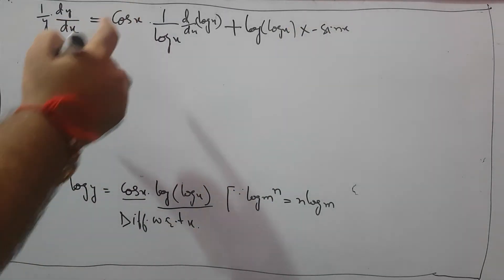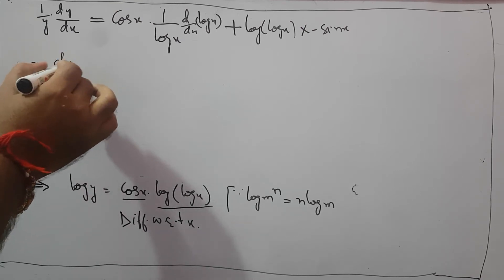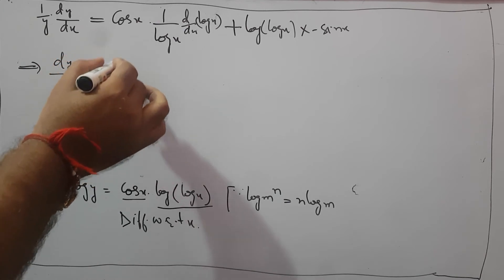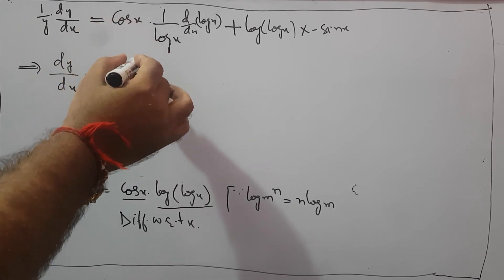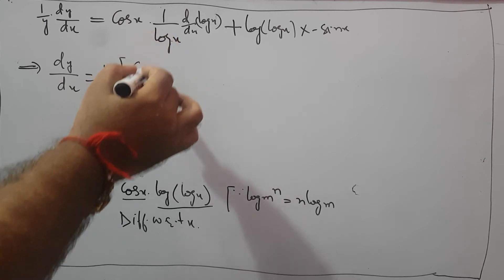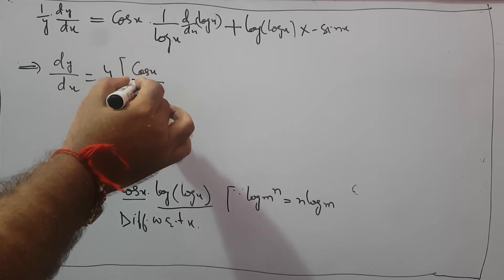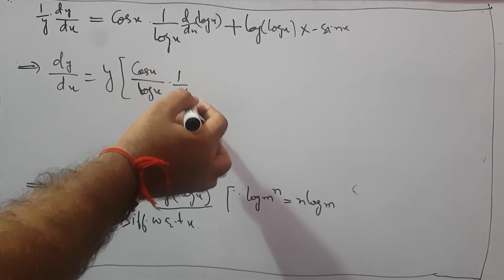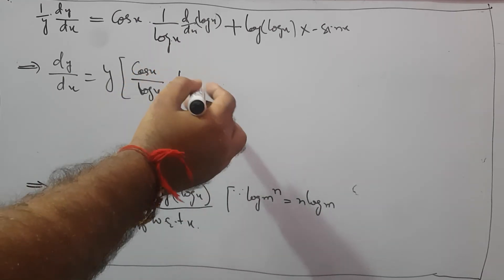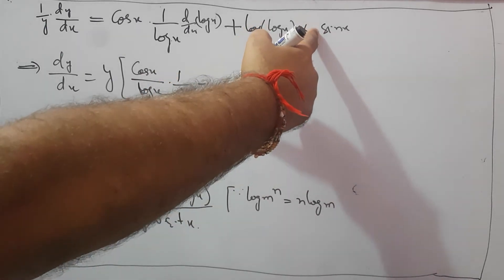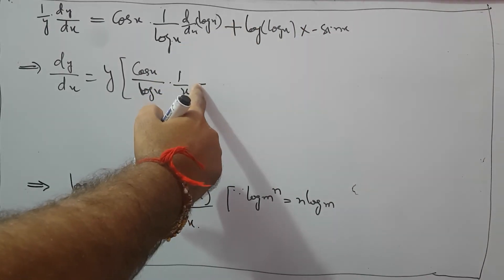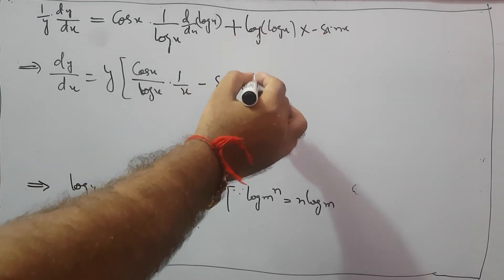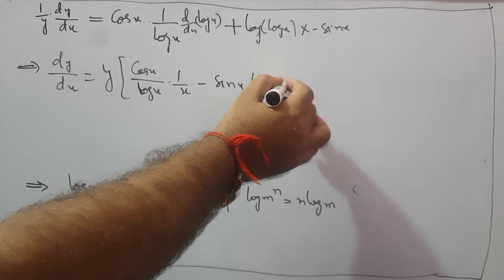Now this y will go to the other side, giving us dy upon dx equals y times the bracket. On the right side we have cos x upon log x times the derivative of log x, which is 1 upon x — no need for a further derivative since it equals 1. Then minus sin x into log of log x.